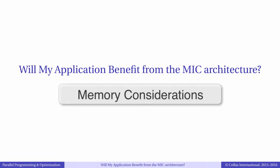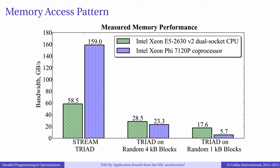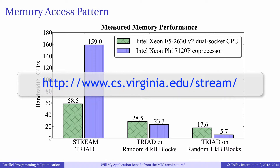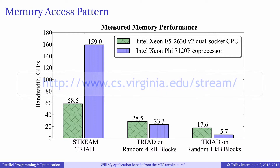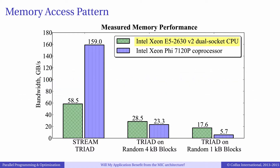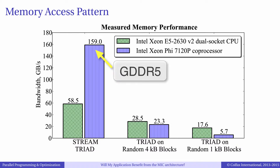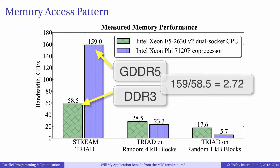Another consideration in the question — will my application benefit from the MIC architecture — is the memory access pattern of the application. Let's take a look at this graph, which shows the result of the STREAM benchmark. STREAM benchmark is an industry standard memory bandwidth benchmark tool. This chart compares a dual-socket Ivy Bridge Xeon processor to a 7100 series Xeon Phi coprocessor. We performed the STREAM triad test, in which large contiguous arrays in memory were read and written. As you can see, Xeon Phi with its GDDR5 memory technology outperforms Xeon processor with DDR3 memory by more than 2.5x in memory bandwidth.